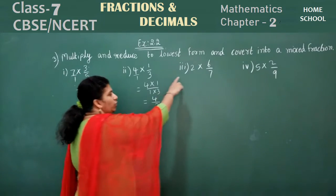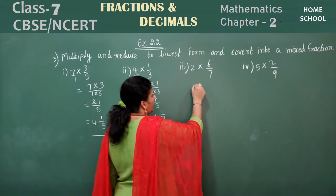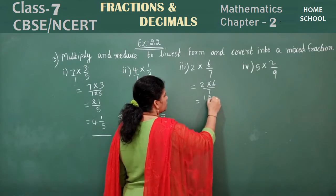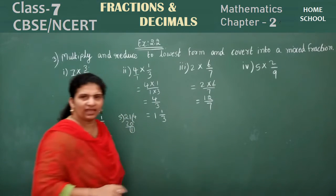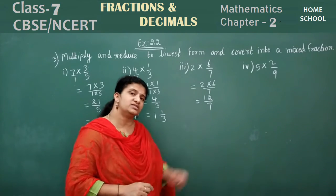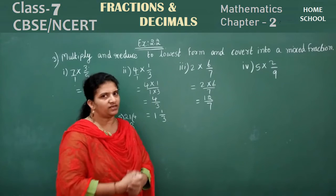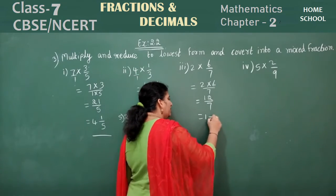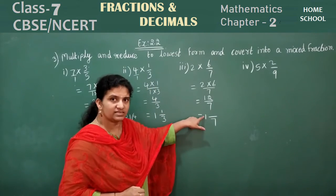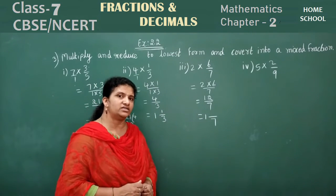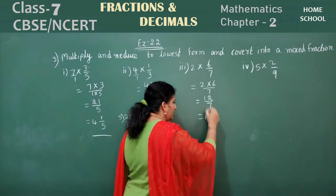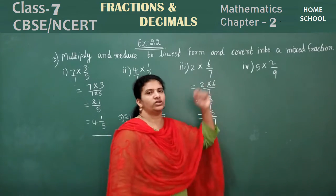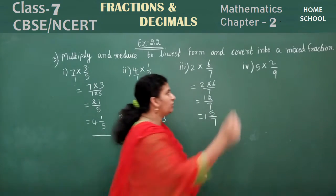Third problem: 2 into 6 by 7. You can do this directly: 2 into 6 is 12, so 12 by 7. The nearest multiple of 7 is 7 times 1 equals 7. Write 1 in the integer part, keep denominator as 7. 12 minus 7 is 5, so the remainder is 5. Mixed fraction answer: 1 and 5 by 7.